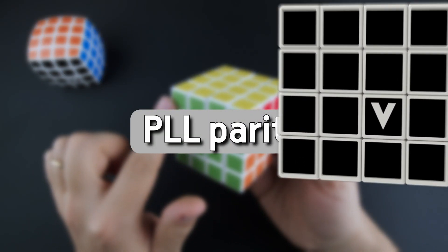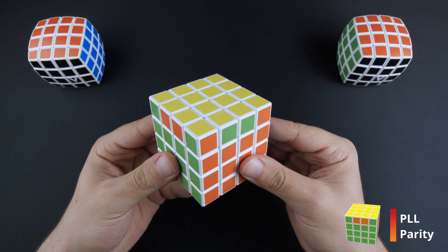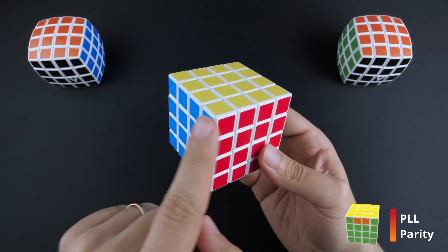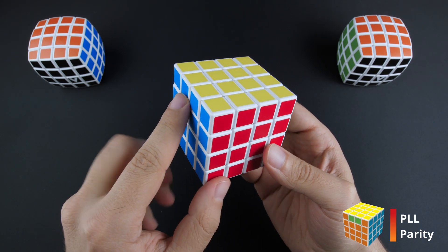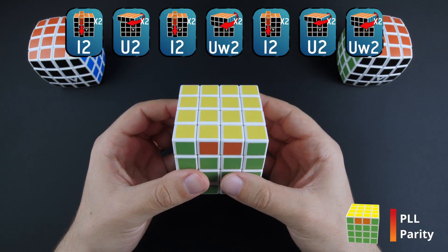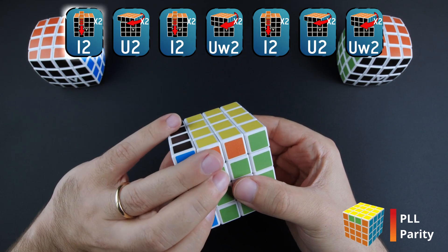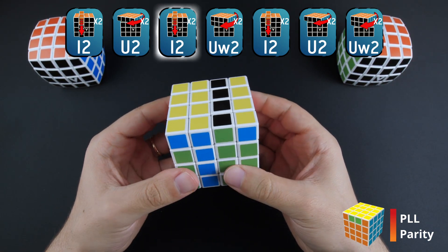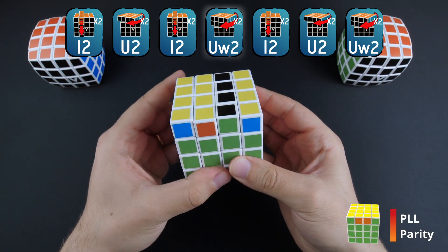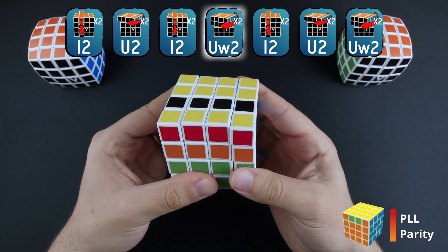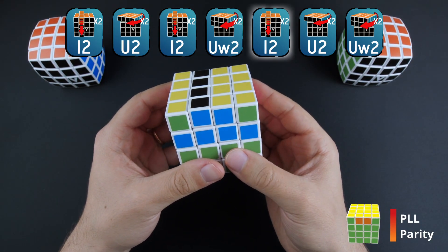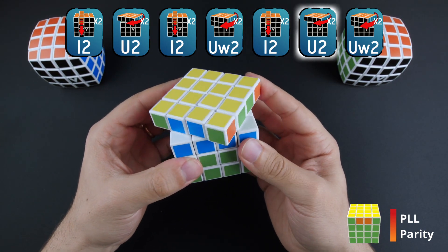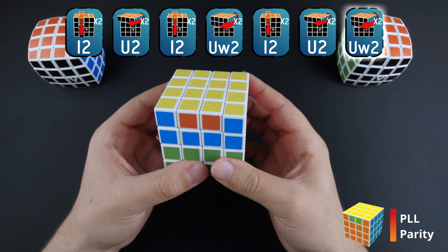The PLL Parity. If you end up with only two edges unsolved, this is called PLL Parity Error and can be mended with this simple algorithm. L2, U2, L2, UW2, L2, U2, UW2.